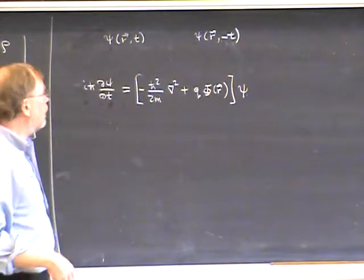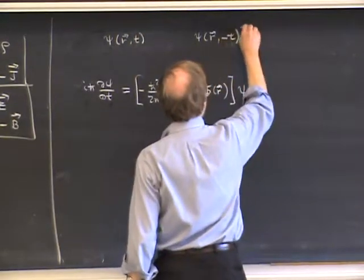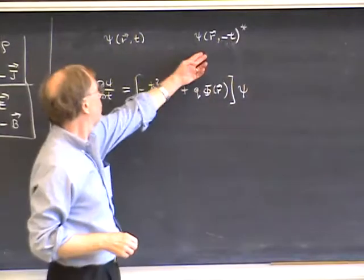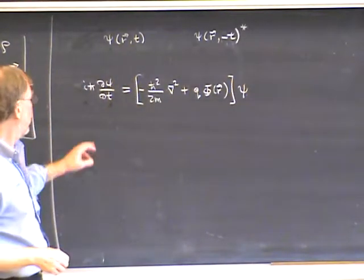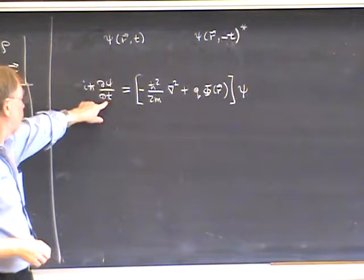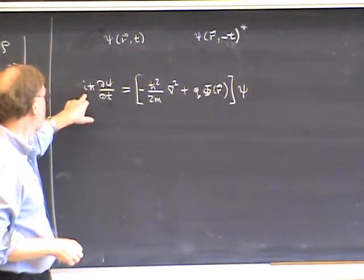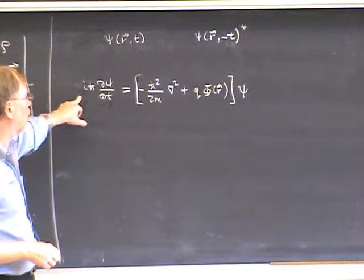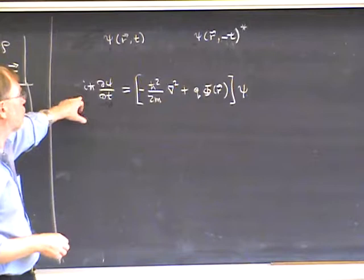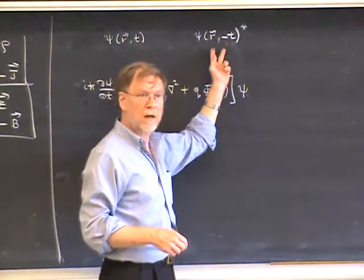However, we can fix this up and obtain a genuine solution if we replace ψ(r, −t) by its complex conjugate. This new wave function does satisfy the original Schrödinger equation, because changing the sign of time introduces one minus sign from the left-hand side, but taking the complex conjugate of the Schrödinger equation introduces a second minus sign because of the i. So time-reversal invariance holds for the motion of a charged particle in an electrostatic field, just like in the classical case, but it's necessary to make this the definition of the time-reversed solution.